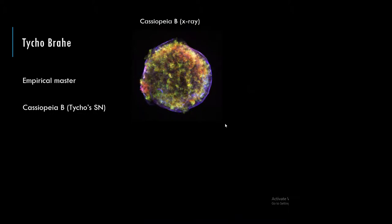Aside from knowing the star chart and observing a supernova, probably the biggest contribution Tycho Brahe made to astronomy is that he was an empirical master. Tycho Brahe dedicated his entire career — almost 40 years — to making accurate measurements. He developed ways of measuring the position of planets against the background stars, developed techniques and instrumentation to get the most precise measurements to date.